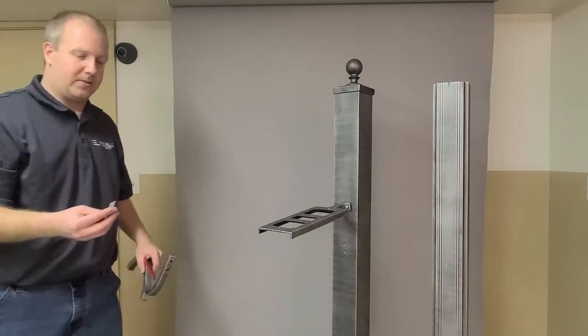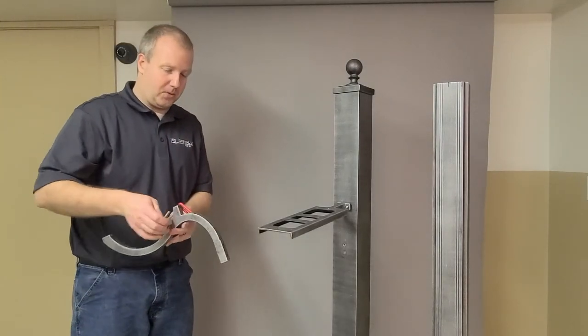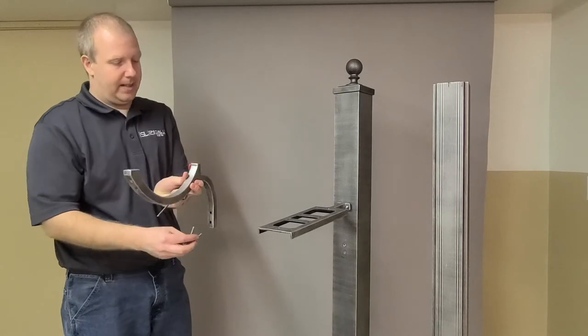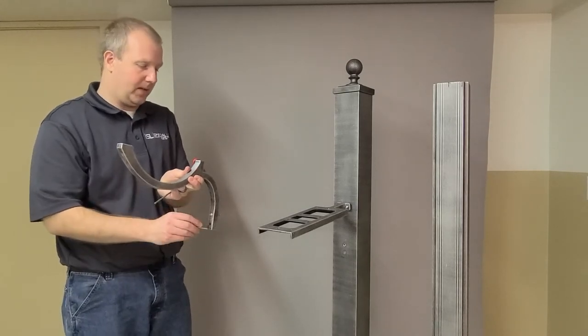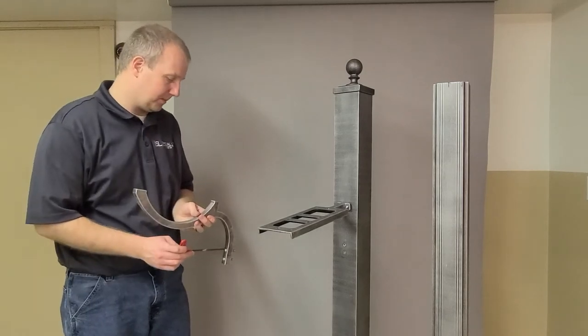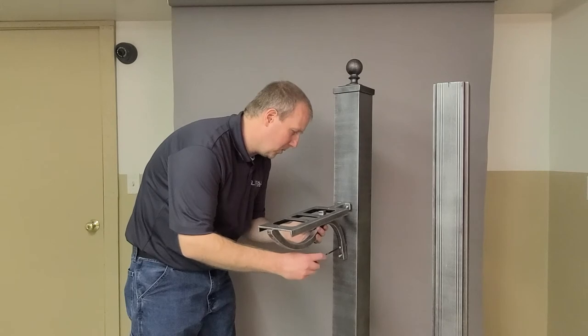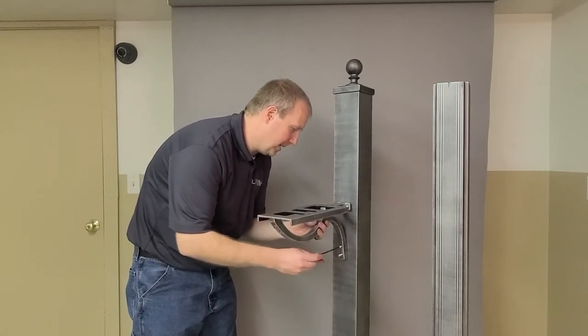And the scroll has two larger screws that come with it. The scroll will go up like this, and there's two holes here. Go ahead and insert the bolts into the two holes, and then line it up with the bottom holes on the post and screw that in about halfway.